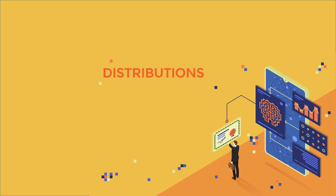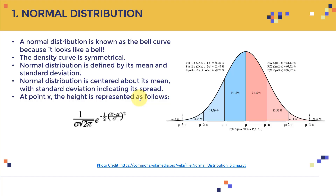Hello everyone and welcome to this new lecture. In this lecture we are going to cover different types of distributions. The first distribution is the normal distribution, which most of you are familiar with — it's also known as the bell curve.